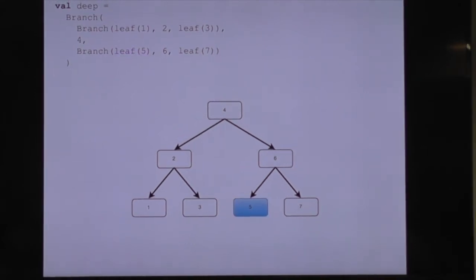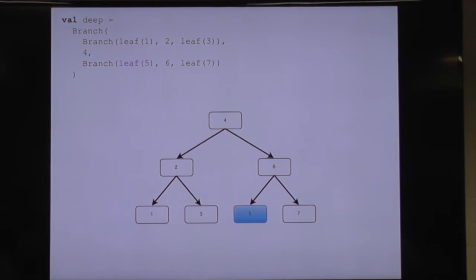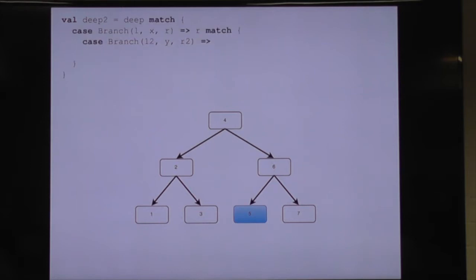See this node down here with a 5 in it? We want to replace that node — it said something mean or something like that. So how are we going to replace that node in this immutable data structure? First we're going to have to walk our way down to that node, and we're going to do that with a pattern match. We're constructing a different tree by taking our original tree and pattern matching it apart. It's a branch with a left subtree, a right subtree, and an x which is the value of the root node, which is 4 in this case.